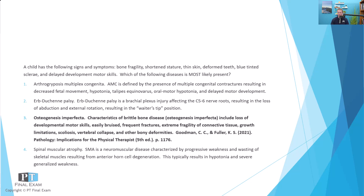When you consider the diagnostic characteristics of osteogenesis imperfecta, the biggest findings are loss of stature and bone fragility — so frequent fractures. They also have connective tissue issues: easily bruised, severe scoliosis, vertebral collapse, extremely thin skin, and blue sclerae. It's the connective tissue causing most of that. So lots of bony deformities, fragility of skin and bones, and connective tissue with pretty severe growth limitations. This is the classic presentation of osteogenesis imperfecta. On x-ray you would see signs of frequent fractures, poor bone structure, and significant deformity of all skeletal and connective tissue.